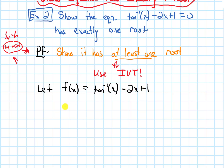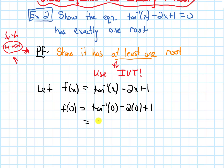Let's start off by plugging in something simple — let's try x = 0. That gives us arctan(0) minus 2 times 0 plus 1. Arctan(0) is 0, and then we get minus 0 plus 1, which is 1. So this output is bigger than zero.